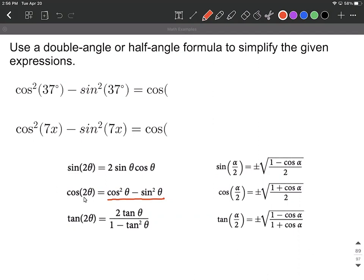Our formula tells us we can simply go with two times whatever's in theta's spot. So this will be two multiplied by 37 degrees, which reduces down to cosine of two times 37, which is cosine of 74 degrees.